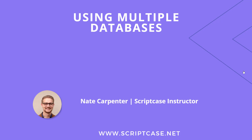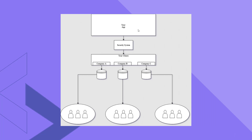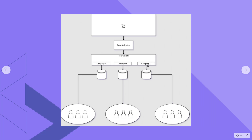Let's do some preliminary work so you can understand a little bit better how this process and flow is going to work. I've got a very basic flowchart here. Up at the top we have your app, and for that application you have a single security system — not multiple security systems for each client. That security system is going to control which database your clients' users can access. So you have three companies — Company A, Company B, and Company C — and each of those companies has their own database and their own users.